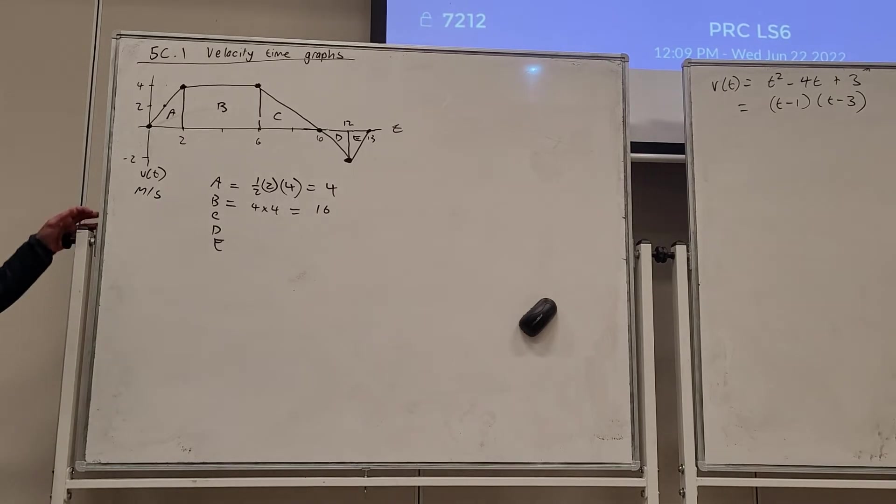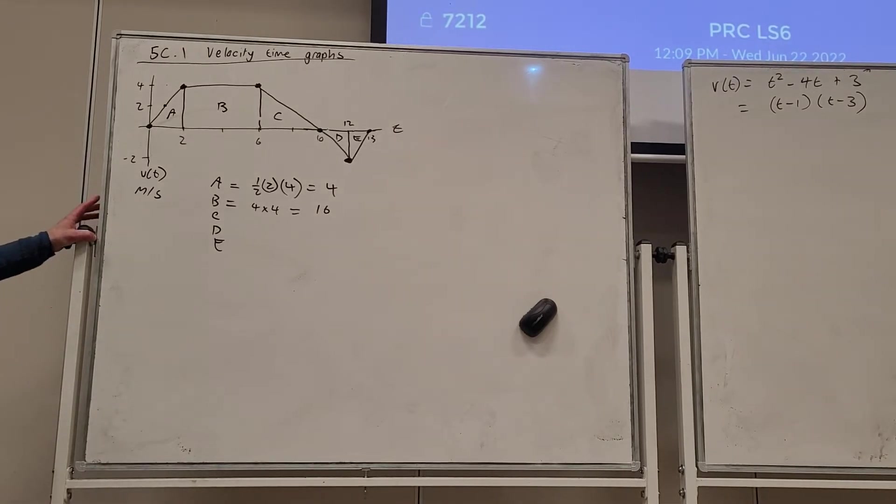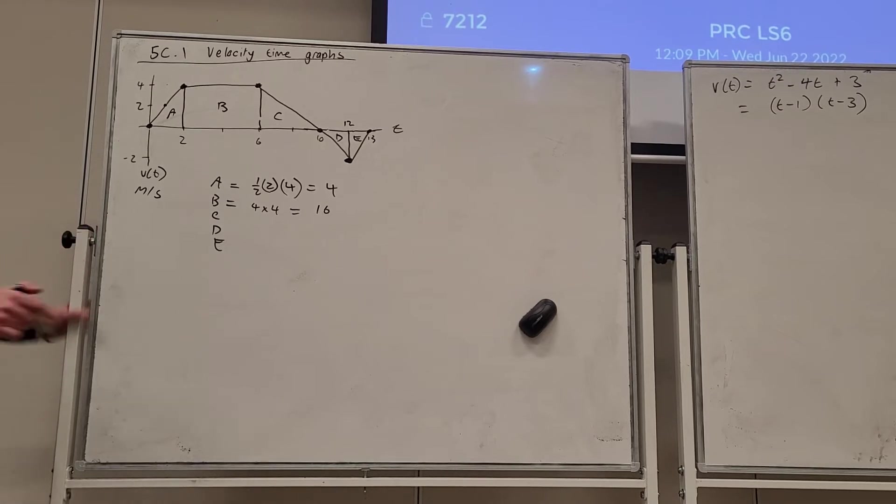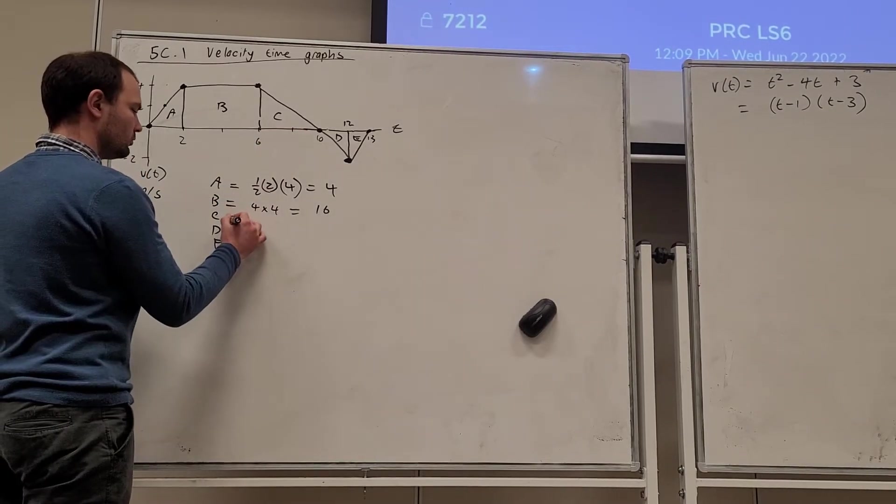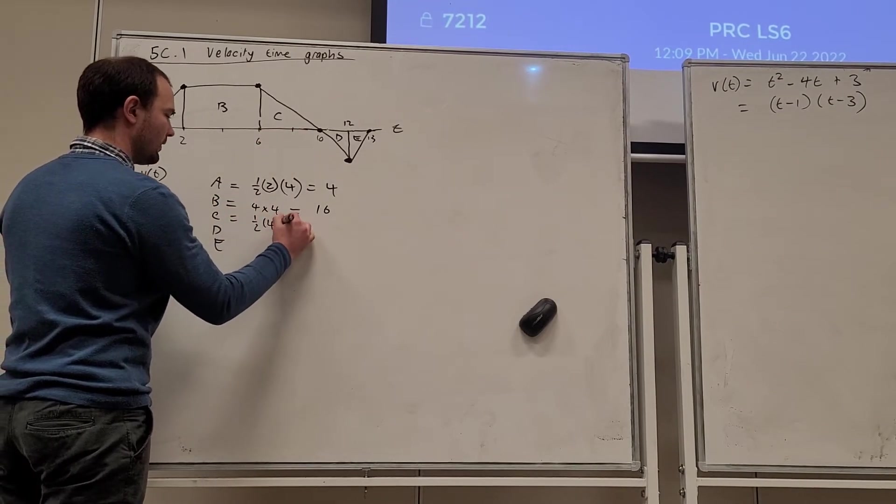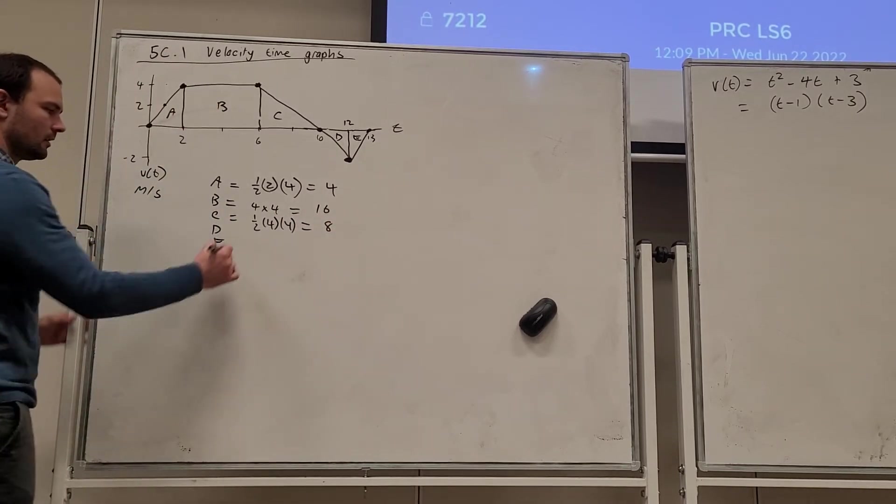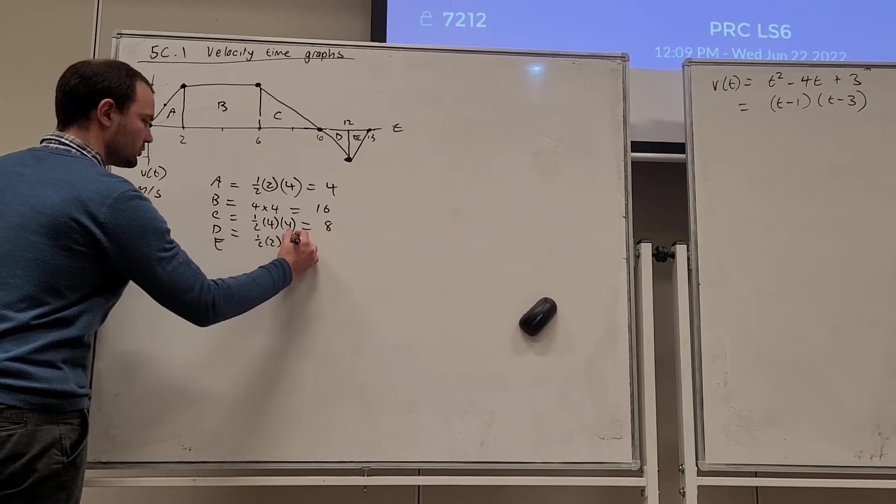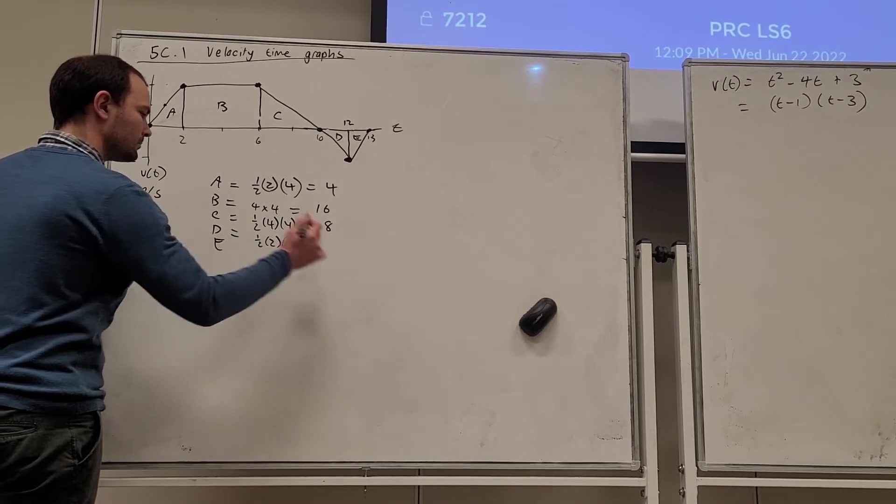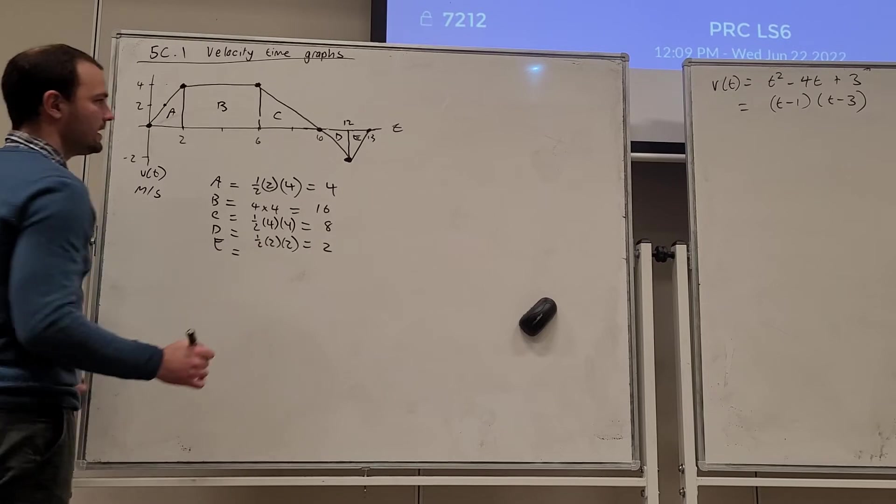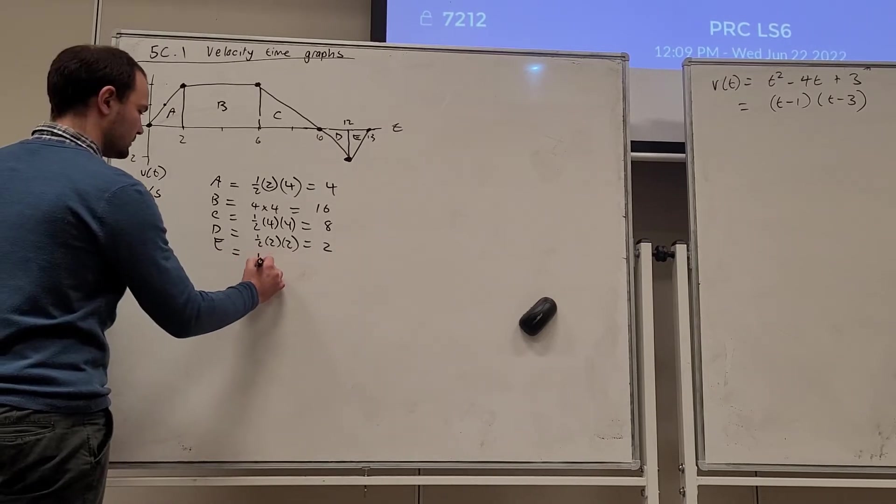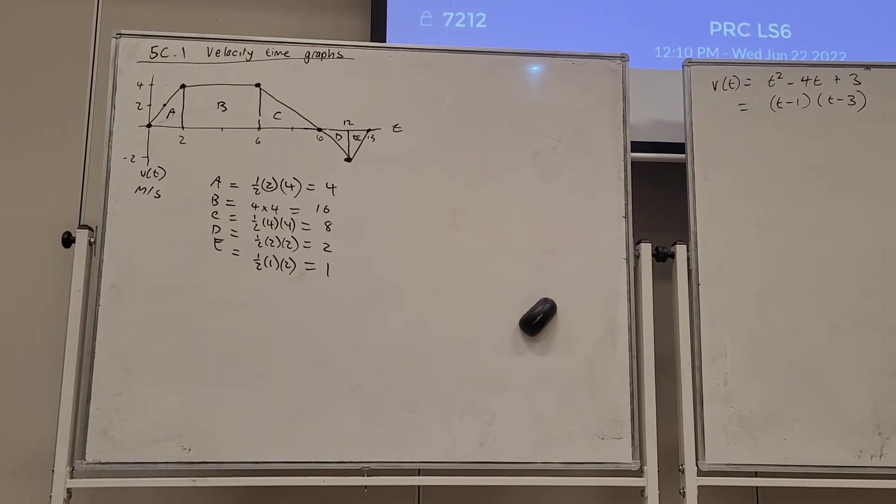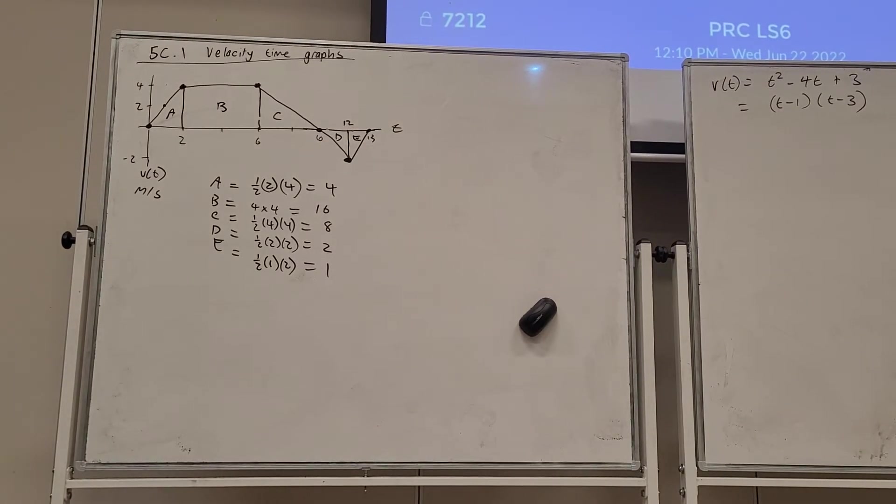All squares are rectangles. Not all rectangles are squares. C is a triangle. The base is four and the height is four. D is a triangle. The base is two and the height is two. And E is also a triangle. The base is one and the height is two.